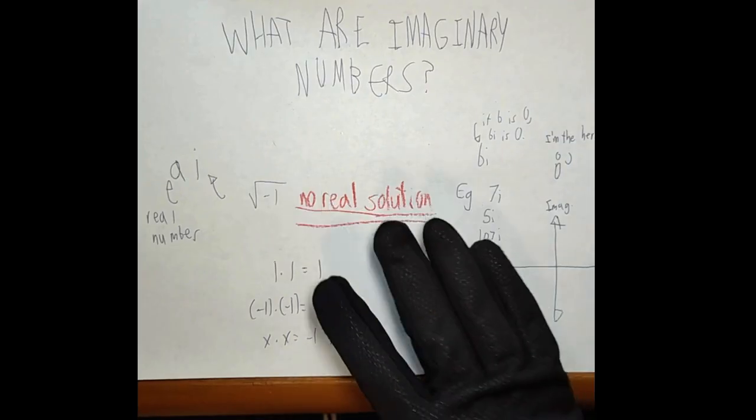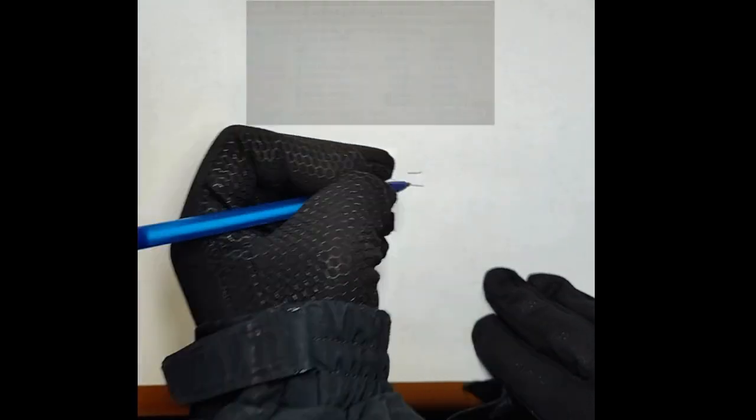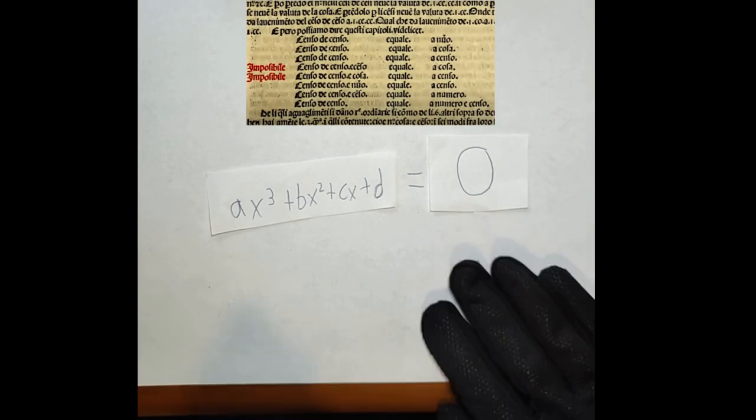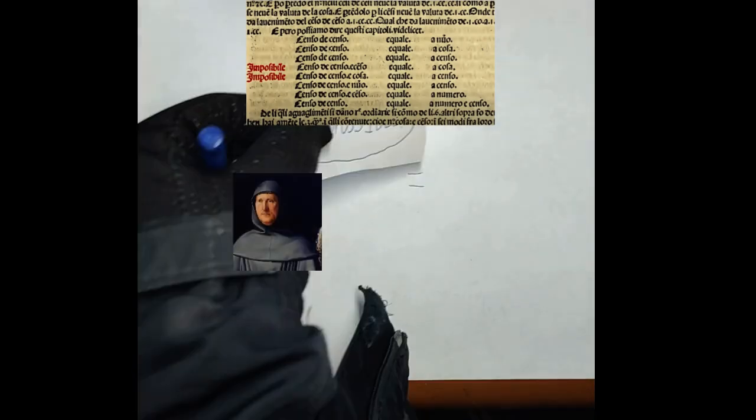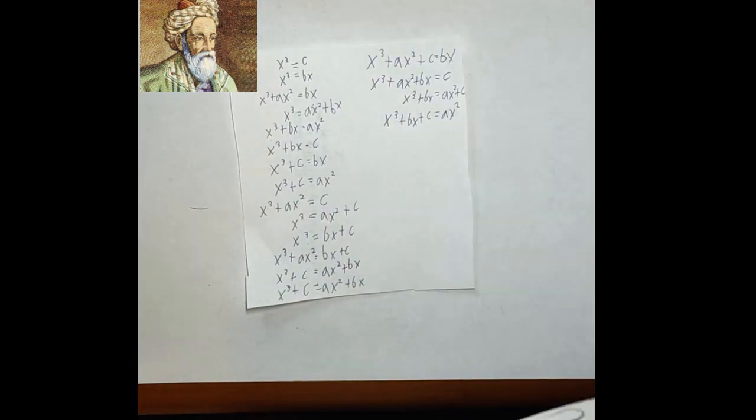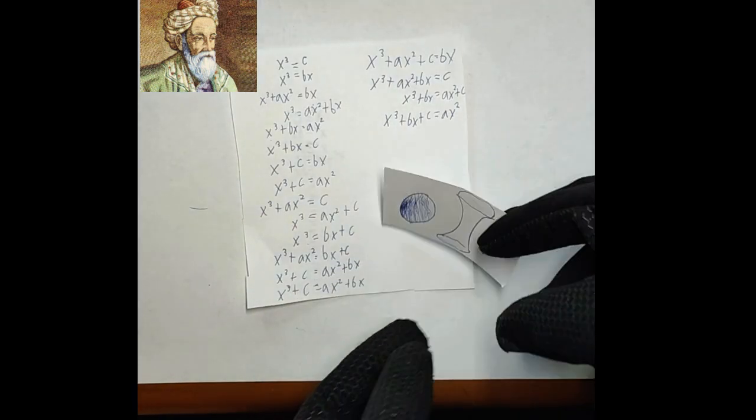In 1494, Luca Pacioli published Summa d'Arithmetica, a comprehensive guide to Renaissance Italian mathematics. Within it was the cubic equation, written in the form ax cubed plus bx squared plus cx plus d equals zero. A general solution was considered impossible for thousands of years. The best attempt occurred 200 years ago, when Persian mathematician Omar Khayyam found numerical solutions using spheres and hyperbolas, but he could not find a general solution.